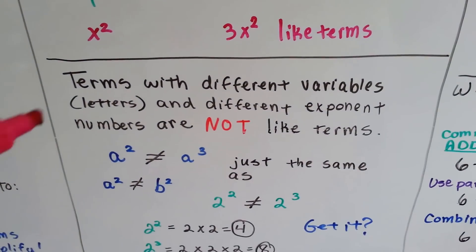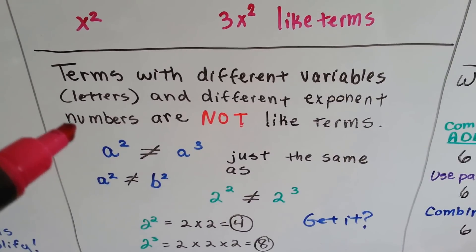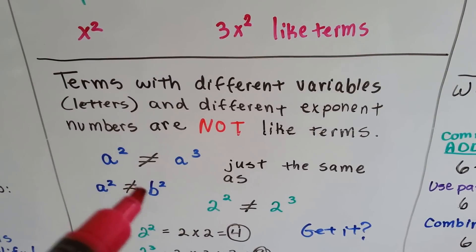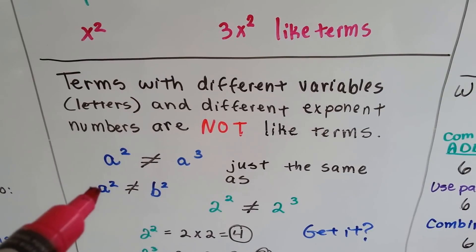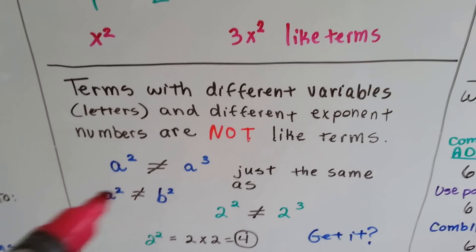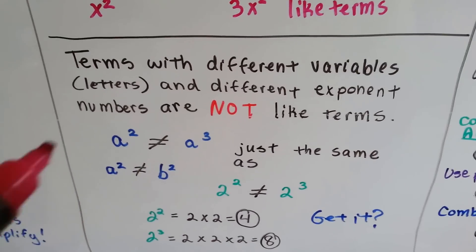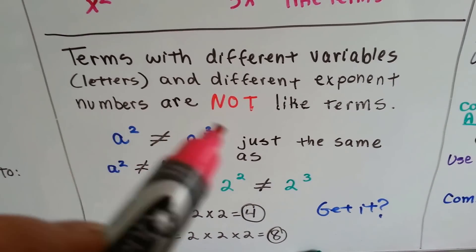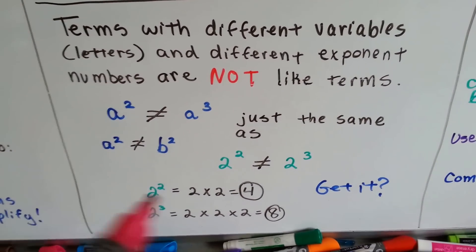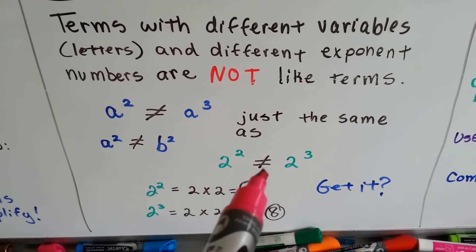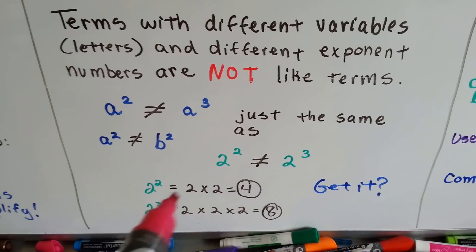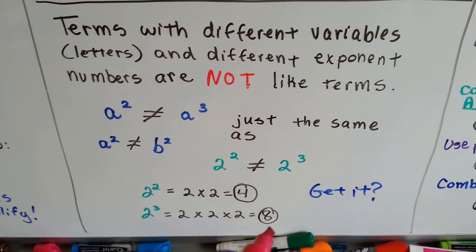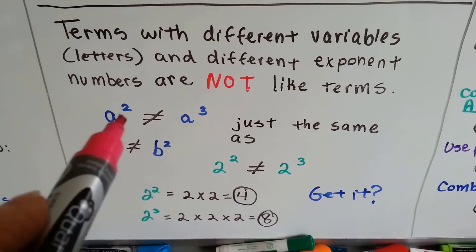Terms with different variables — letters — and different exponent numbers are not like terms. a squared is not equal to a to the third power, and a to the second power is not equal to b to the second power. What if a was 2 and b was 9? That wouldn't be the same thing, right? They're different variables, so they represent different numbers. 2 to the second power is 2 times 2, that's 4. 2 to the third power is 2 times 2 times 2, that's 8. 4 and 8 aren't the same thing, so these aren't the same thing.